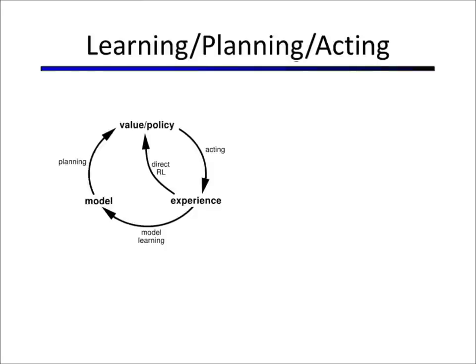We will recall everything we learned in Markov decision processes. This builds forward from the MDP literature. What we learned then is that we have a model with states, actions, transition probabilities, and rewards. Based on value iteration — which is equivalent to inference — we learn a value for each state, and based on knowing the value of each state, we know what the right action is. However, we assumed the model was given to us. This is the planning problem because the model is completely known.